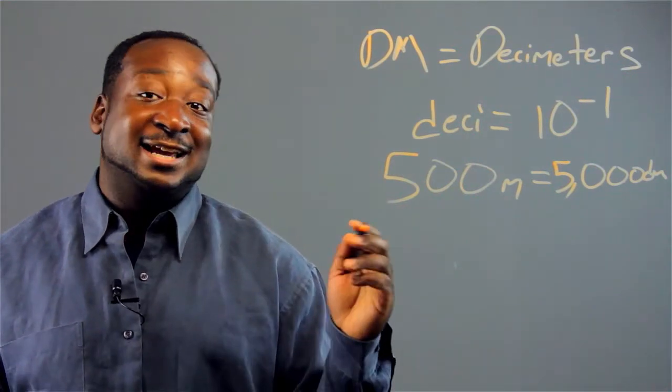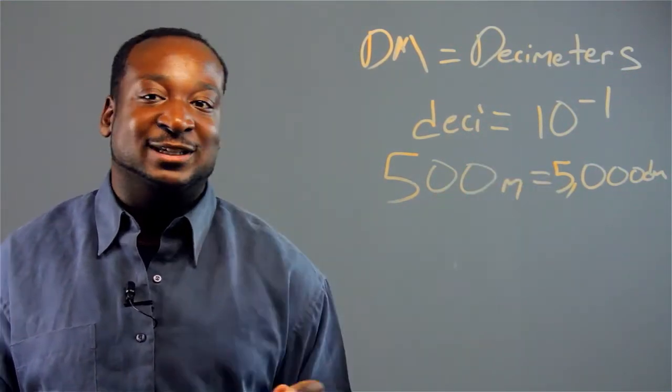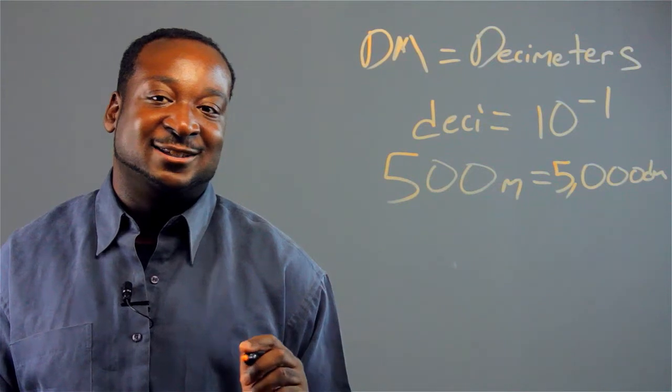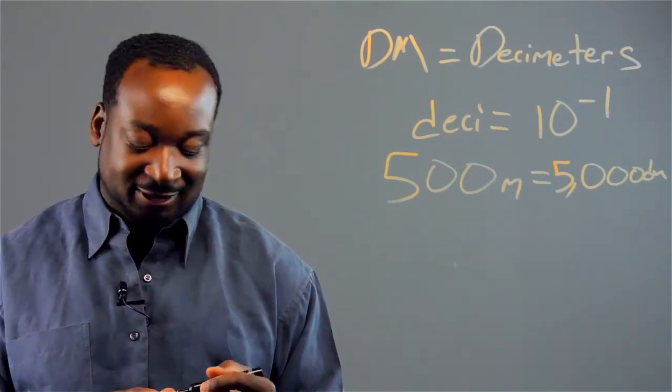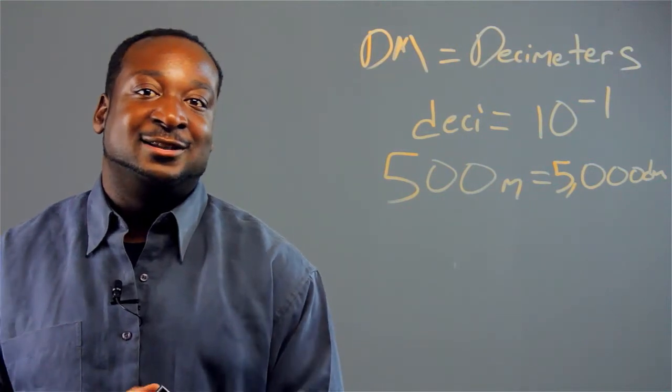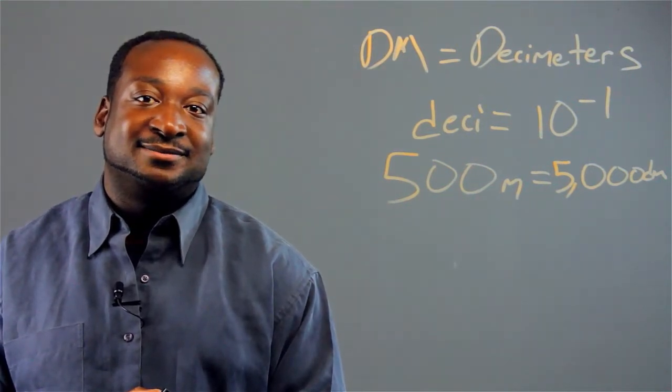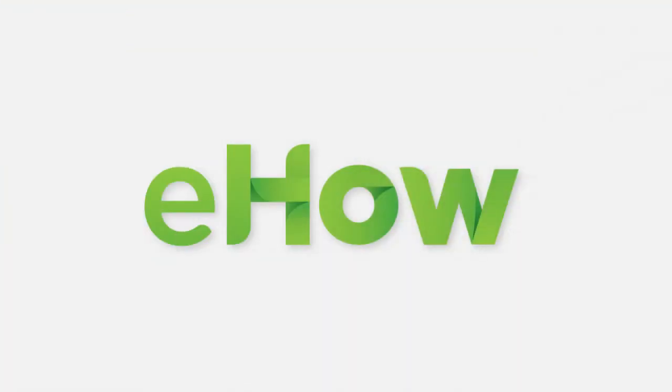You don't see deci too often because you just move the decimal place over one time, so it doesn't change the computation that much. So there you have it, the meaning of DM in mathematics. Thank you.